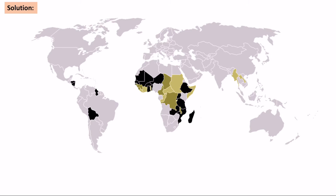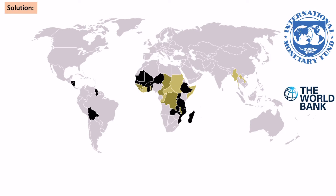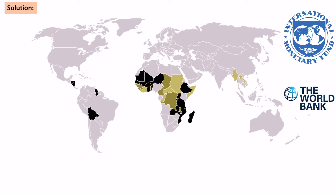This was brought in by big organisations. The International Monetary Fund and the World Bank came up with a plan called the Heavily Indebted Poor Countries Initiative, or HIPC. That was focusing on 39 countries which they thought were the poorest and most in debt and could benefit from having debt taken away.